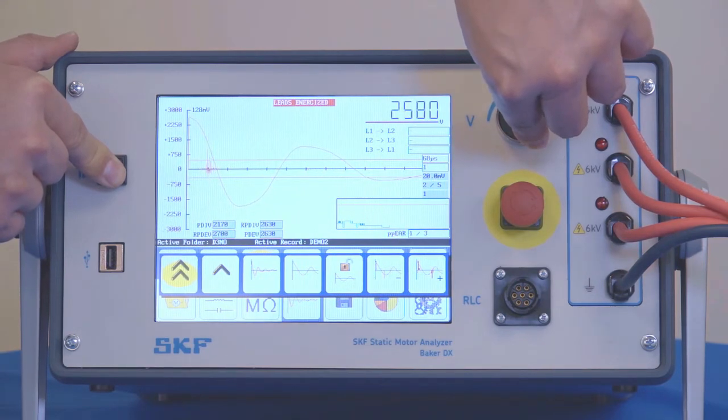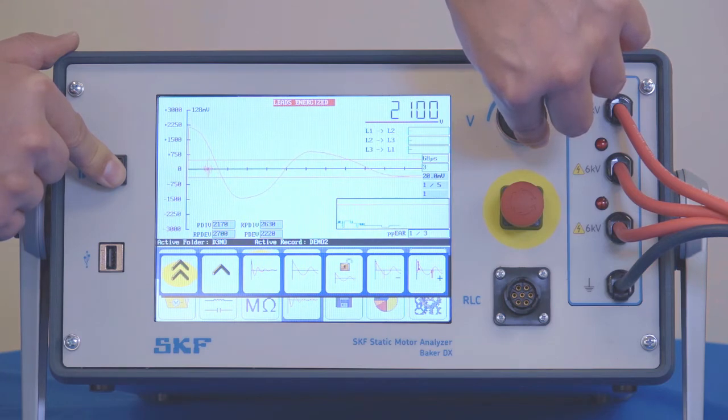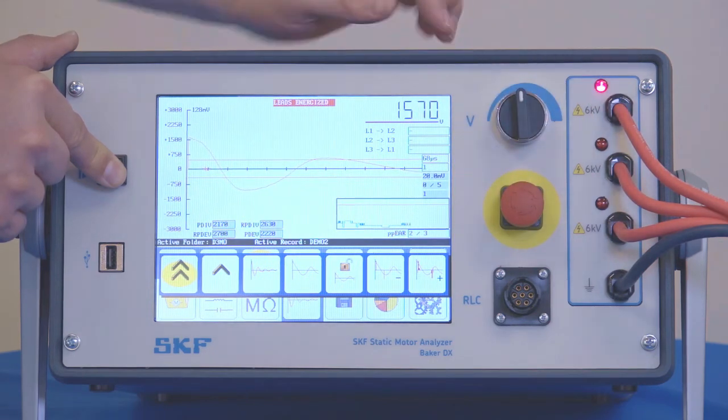As you can see immediately the extinguished voltage populated. I'm going to continue to ramp until that partial discharge extinguished voltage goes completely away and the voltage is at a minimum. Then we can stop the test.